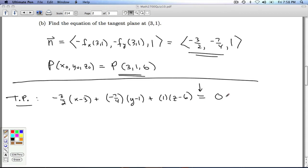Don't forget, it's equal to zero. It's an equation of a plane. Let's try to clean this up a little bit. I get negative 3 halves x minus 7 fourths y plus z. And let's see what the constant term is going to be. I get a negative times a negative, it's a positive 9 halves, a positive 7 fourths, and a negative 6. So 18 fourths and 7 fourths would be 25 fourths minus 24 fourths, which gives you a positive 1 fourth, equals zero.